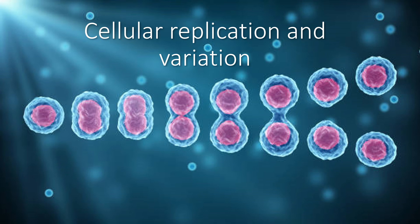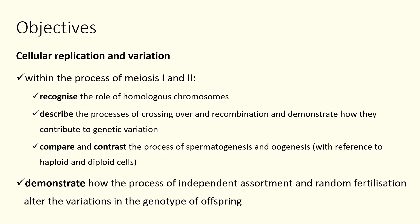Today we're going to talk about cellular replication and variation — that's what it says on the syllabus objective. If you wanted to summarize it in one word, effectively what we're looking at is meiosis, depending on how you pronounce it. If we look at our syllabus objectives for this unit, this topic is going to be broken up across a couple of videos. We're going to start off by looking at the process of meiosis — there's not a lot here, but it all circulates around meiosis. If you understand meiosis, you're going to understand basically how to answer most of these.